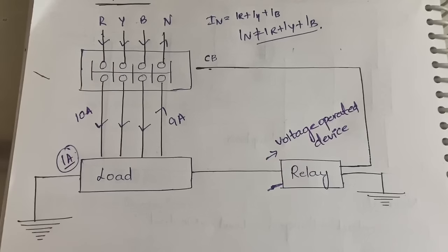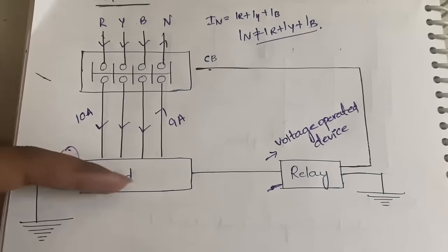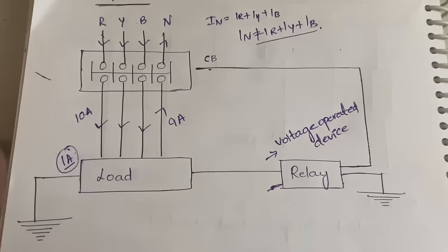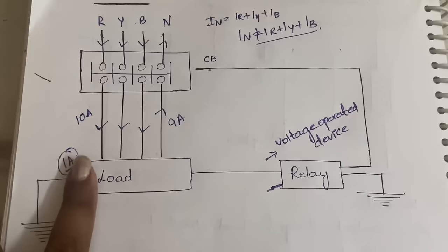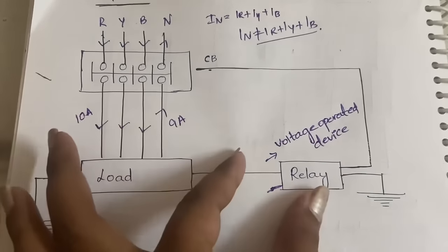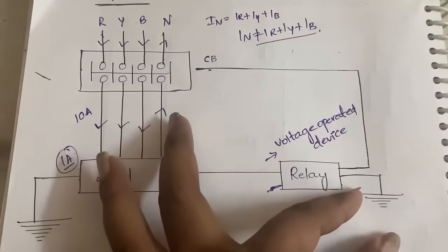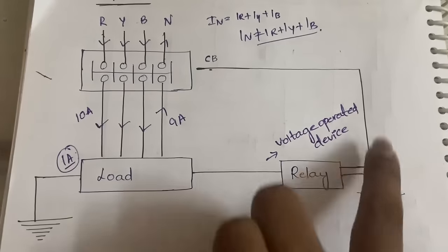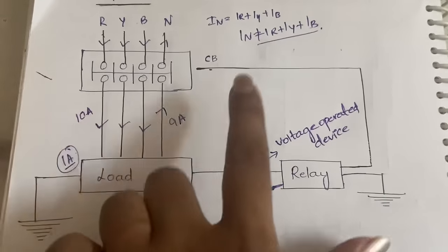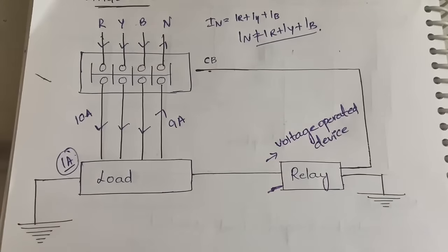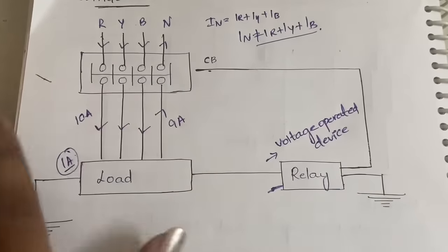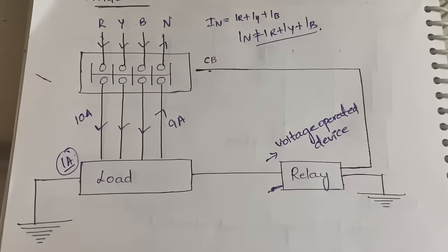This is what happens in a voltage operated ELCB. Whatever current comes through RYB must return through neutral — that is normal condition. If not, the leaked current is sent to the relay, which sends it to ground and simultaneously signals the circuit breaker to switch off the main supply so that no current flows.